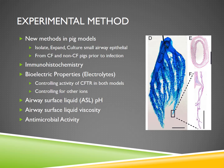They developed a new method in pig models where they attempted to isolate, expand, and culture small airway epithelial cells from both CF and non-CF pigs that they raised in a lab prior to any lung infections. They had to raise the pigs and harvest their lungs shortly after birth so as to make sure that their lungs did not become infected, as would happen with pigs diagnosed with cystic fibrosis.